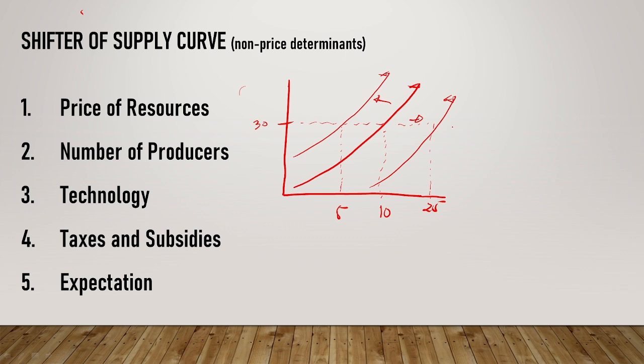Again, price does not shift the curve. Price only moves along the curve. If you change the price, increase or decrease the price, your movement is along the curve only. But if there are shifters involved, like price of resources increased, price of pork increased, number of producers increased, import of technology, reduction of tax, subsidies, price will increase tomorrow or decrease tomorrow - it's about the shifters. So your movement shifts inward or outward.